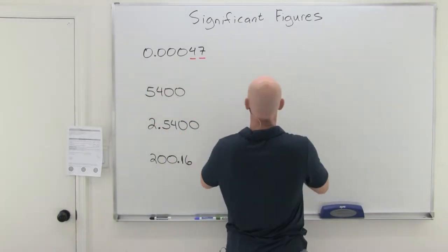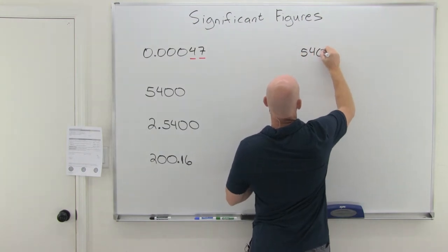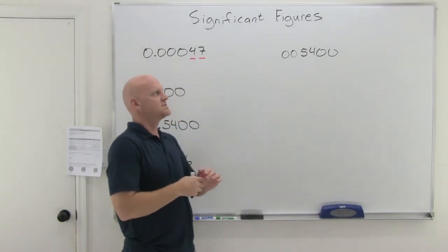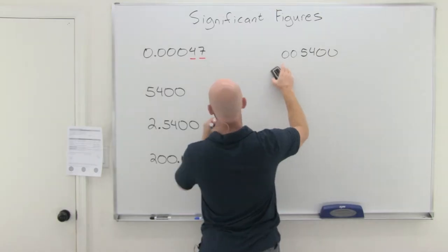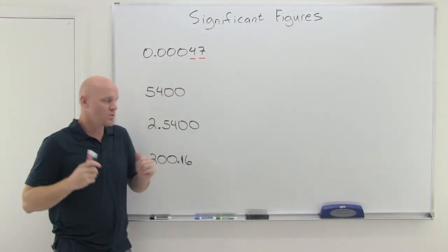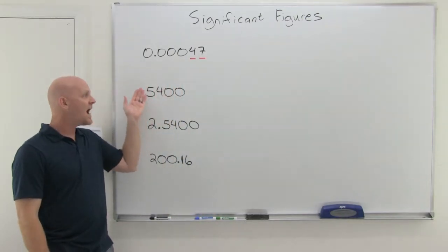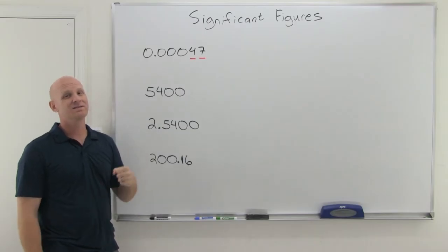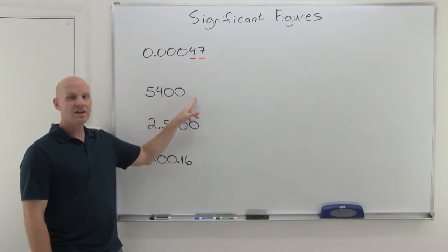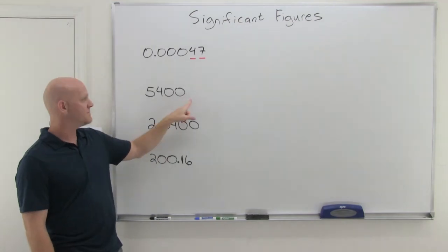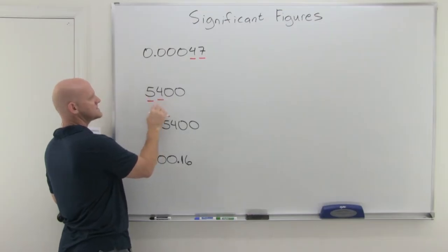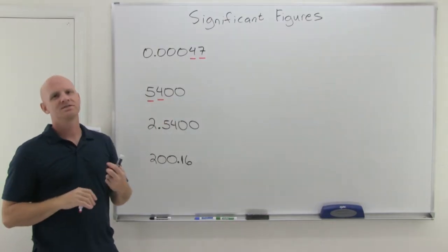Now notice this next number — 5,400. Zeros at the beginning of a number, it doesn't matter which side of the decimal place they are on, are not going to be significant. And the reason that becomes important is because zeros at the end of a number are sometimes significant and sometimes they're not. When you end a number in zeros to the left of the decimal, and often the decimal wouldn't even be written — those zeros are not going to be significant either. So here we've also only got two significant figures.